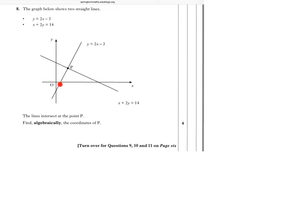Right, so you can see that the equation of one of the straight lines is y equals 2x minus 3. The equation of the second straight line is x plus 2y equals 14. We can definitely interpret this question as simultaneous equations, because simultaneous equations gets you the point of intersection of two straight lines. So I'm going to first of all call this equation y equals 2x minus 3 equation 1.